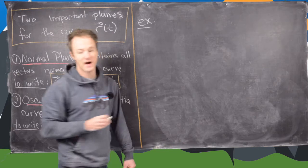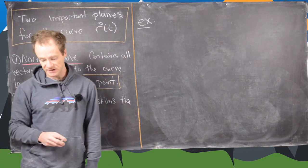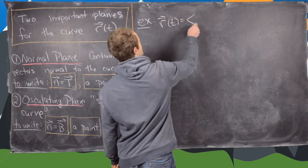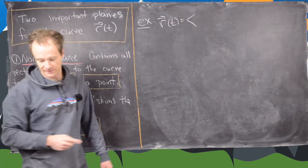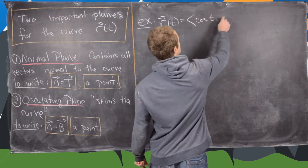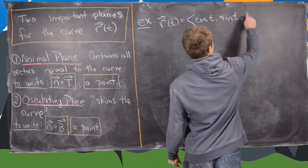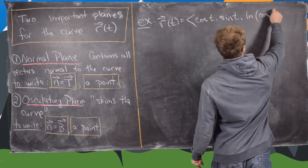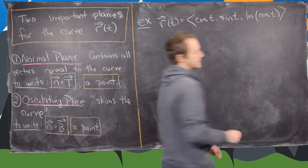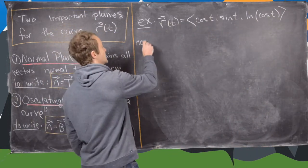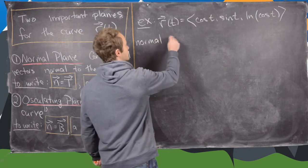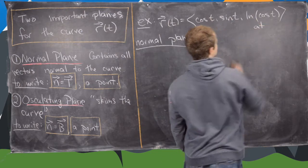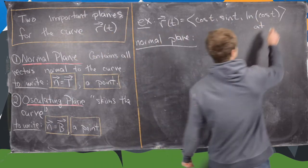We're going to find the equation of each of these planes for a couple of parametrized curves. The first one we're going to look at is the one defined by cosine t, sine t, and then the natural log of cosine t. Let's first find the normal plane, and we need a point — so let's say we're at the point (1, 0, 0).